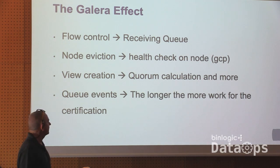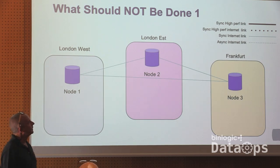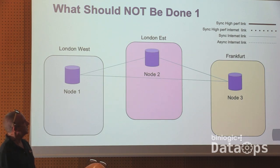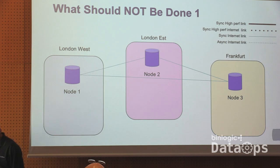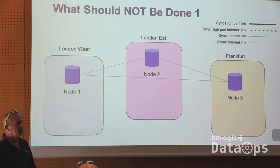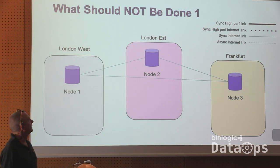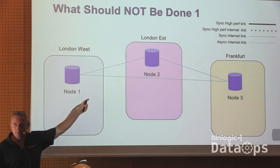What you should not be doing: using PXC or Galera across a synchronous high-performance link, synchronous high-performance internet link, synchronous internet link, and asynchronous internet link all together. I have seen this. What do you think? I think the person who designed that should be fired — because you have no idea what you are doing. And this is with Galera, not with asynchronous replication. Would you do this with group replication?